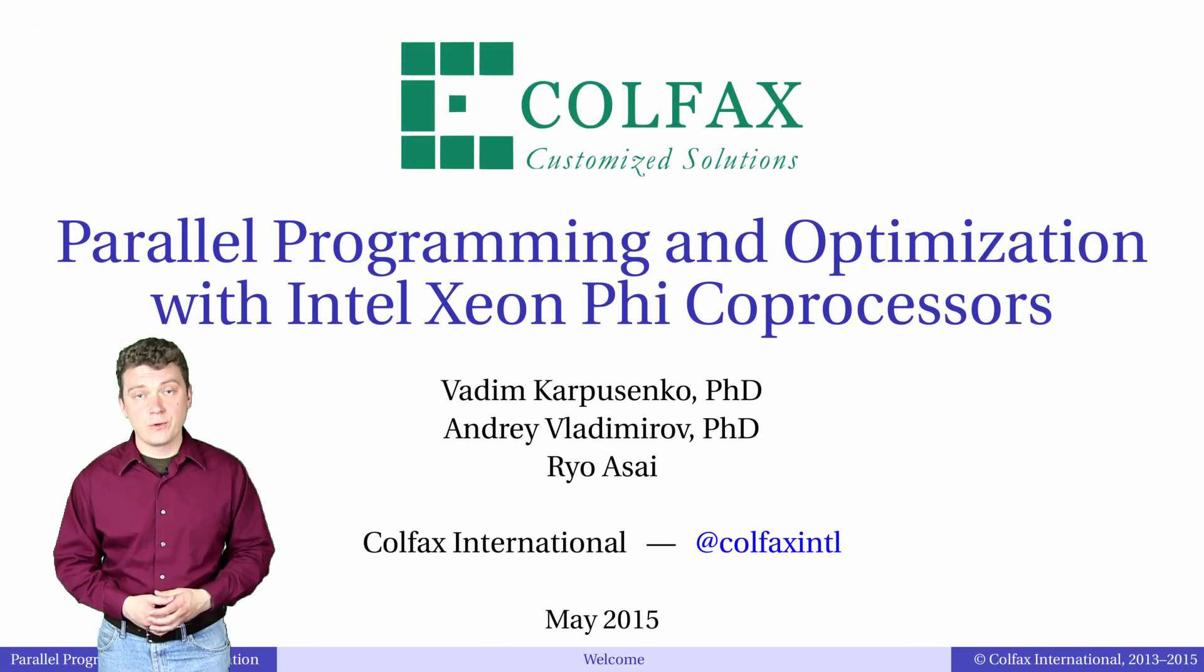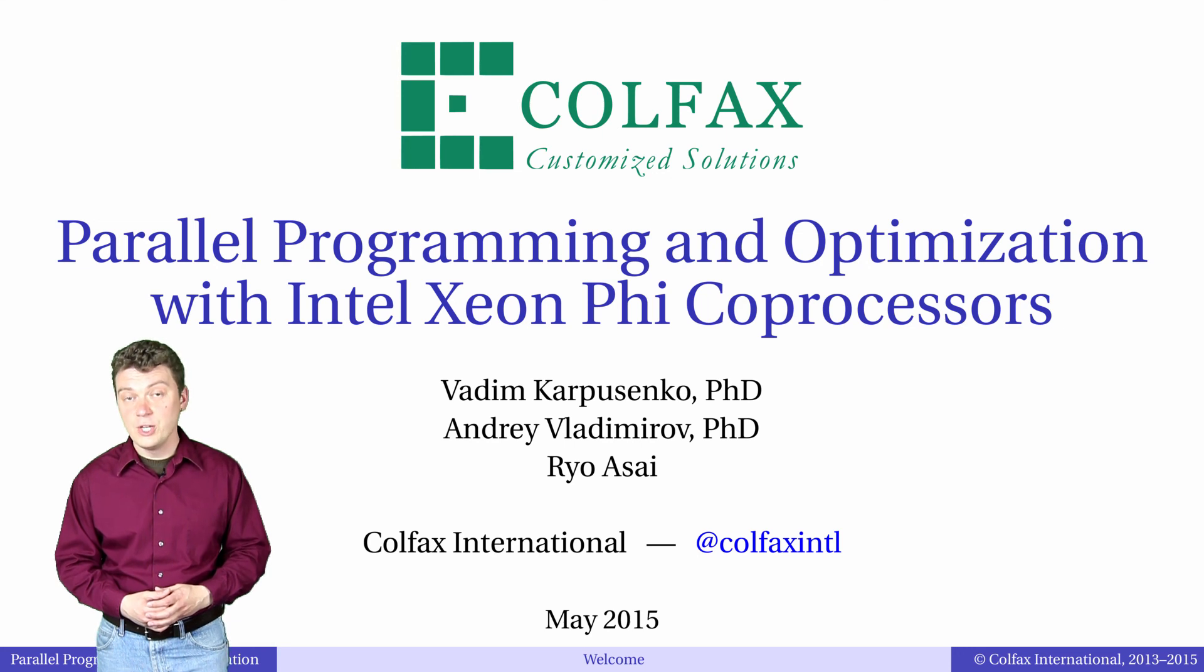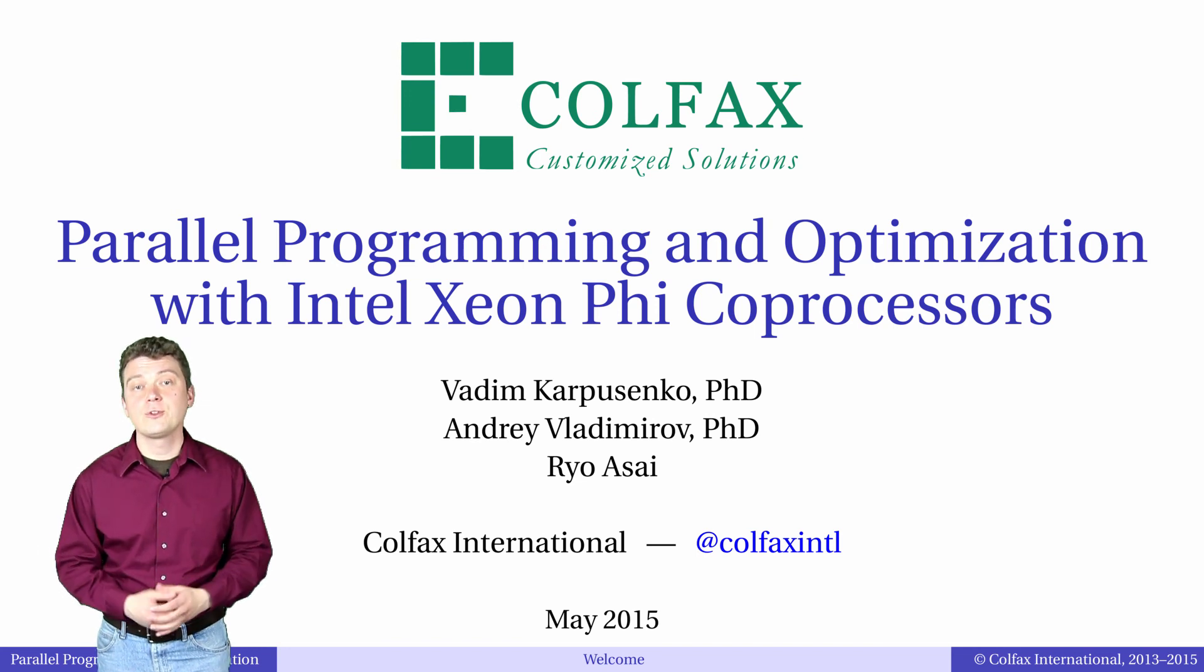That is all for now about automatic vectorization and array notation. In the next episode, we will consider cases when compiler refuses to vectorize the user's code due to assumed vector dependence. We'll demonstrate how to overcome those obstacles if you don't have true vector dependency in code. Thank you for tuning in and I hope to see you in the next episode.